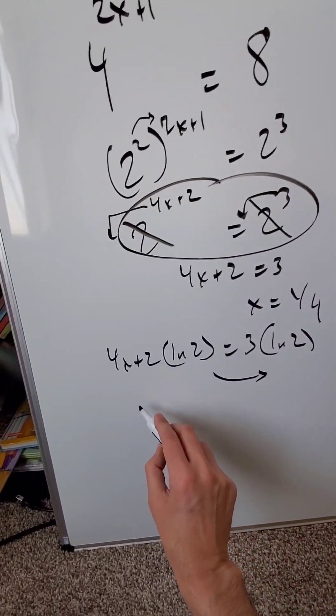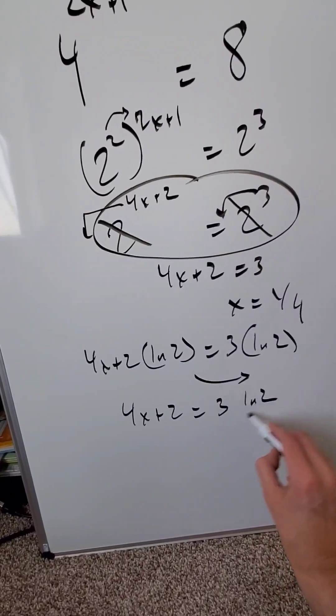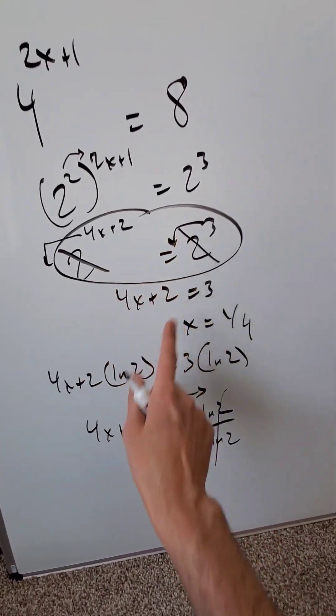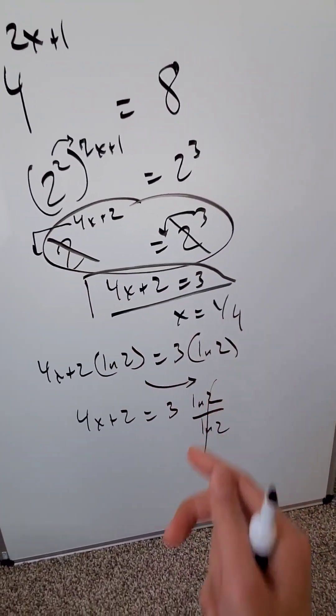When you push this one natural log on the other side, it cancels out. 4x plus 2 is equal to 3 natural log 2 divided by natural log 2 and they cancel out. Hence, your exponents become your new expression as you see right here. And then you just do your basic algebra from there.